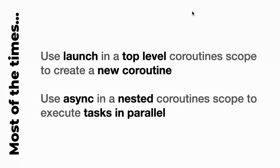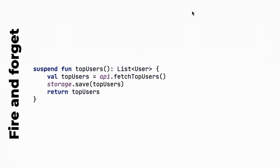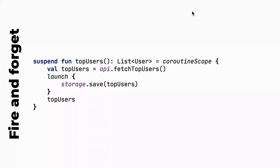So: launch at the top level to enter the coroutine world, async in a nested coroutine scope to manage parallelism and execute things in parallel. Of course there are exceptions, so this rule holds most of the time.